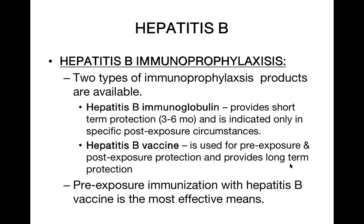Regarding immunoprophylaxis of hepatitis B: there are two types of products — immunoglobulin (passive immunization) and vaccine (active immunization). Hepatitis B immunoglobulin provides short-term protection lasting about three to six months and is indicated only in specific post-exposure circumstances, especially in the newborn period when the mother is HBsAg positive.